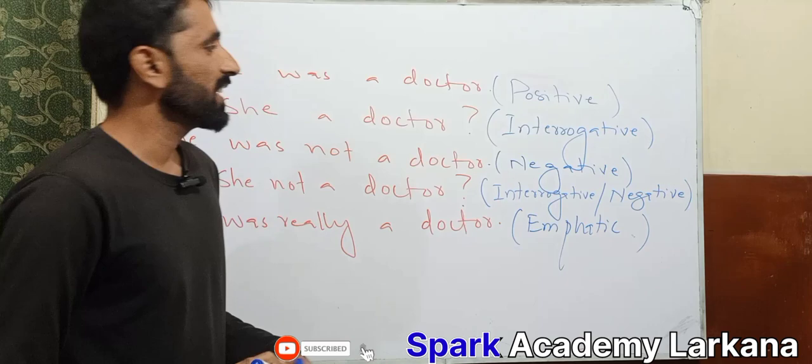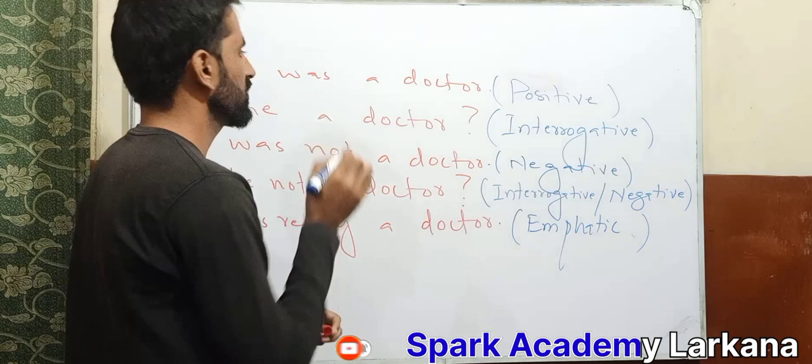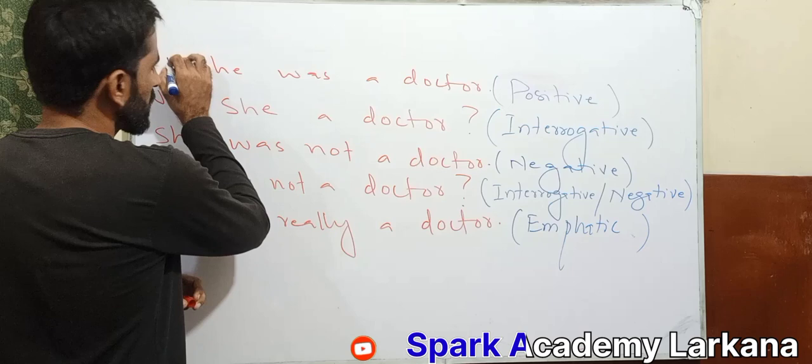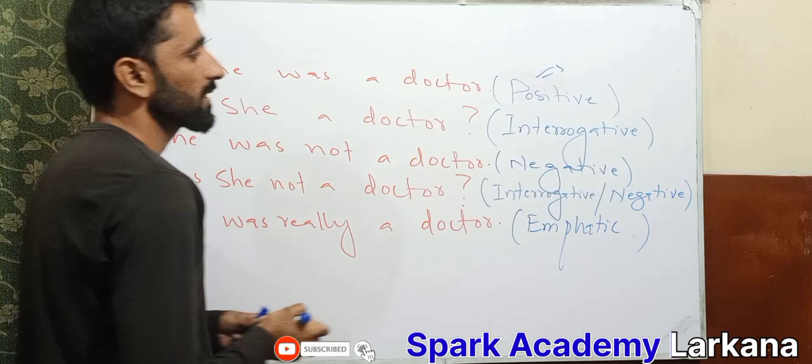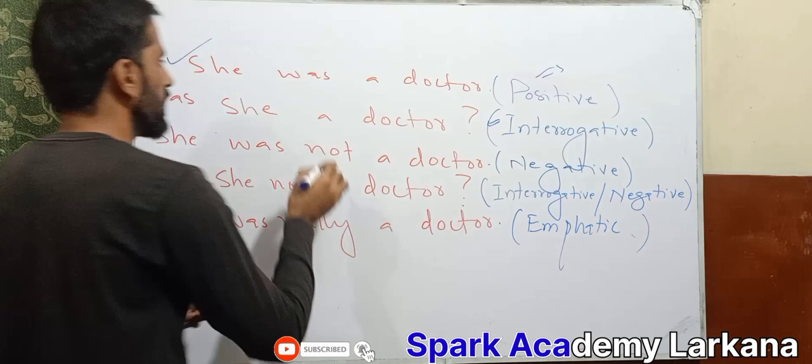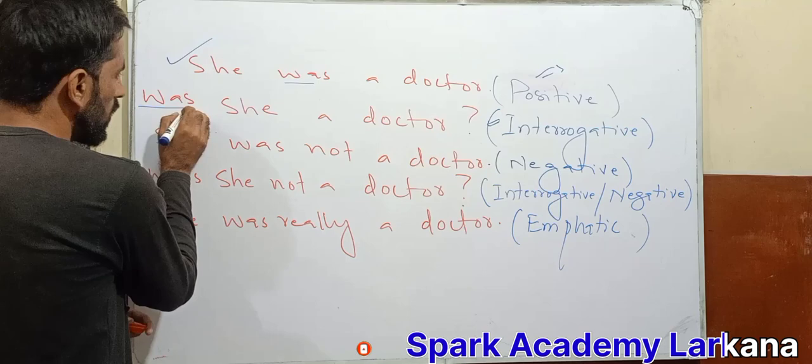Let's learn how we use 'was' and 'were' in tables — in positive, interrogative, negative interrogative, negative, and affirmative sentences. For example: 'she was a doctor' — this is a positive sentence, also called an affirmative sentence. To make an interrogative sentence from this, we say 'was she a doctor?'